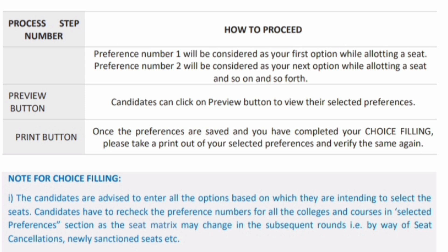There will be a print button. Once preferences are saved, you have completed choice filling. You can take a printout of your selected preferences and verify that you have added everything correctly — that is very important. Candidates are advised to enter all the options of colleges they intend to take. Do not add any college from any city of Karnataka carelessly, because if you get allotted there by default, you will have to join that college. Think two or three times and do some preparatory work on paper before doing choice filling.